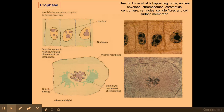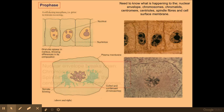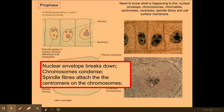The first stage is prophase. You can remember the stages of mitosis by PMAT, which is a good way to remember the different stages and their order. In prophase, the main things that happen are: the nuclear envelope breaks down, the chromosomes condense, and the spindle fibres attach to the centromere on the chromosomes.